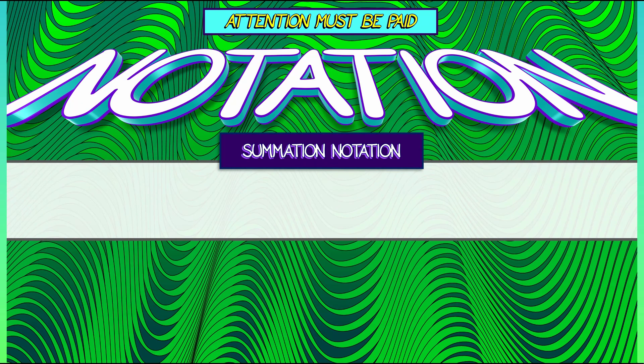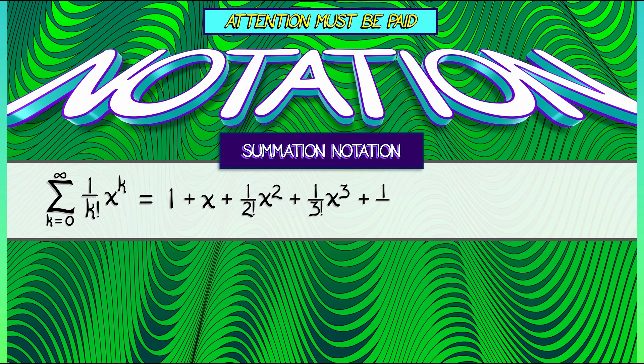So for example, when we looked at the exponential series, we could write that as the sum as k goes from 0 to infinity of 1 over k factorial times x to the k. Now we can also write that as 1 plus x plus x squared over 2 factorial plus x cubed over 3 factorial, et cetera. But this summation notation is nice. It's very compact and it tells you exactly what to do to write out that series.